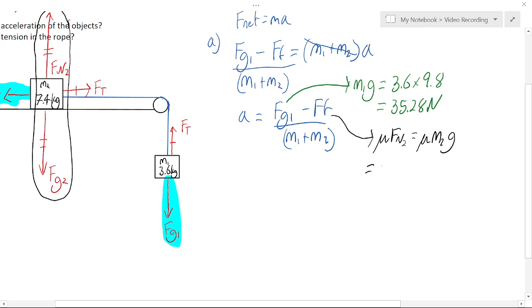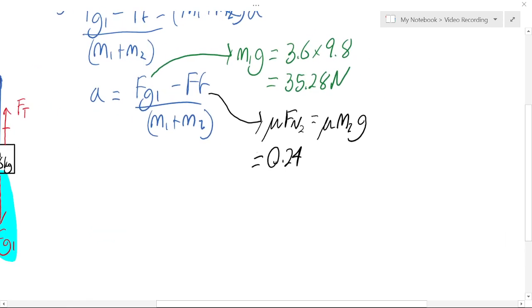so this is all equal to 0.24 is the mu value given in the question. M2 is 7.4. And lastly, g is 9.8. So the total friction force on the mass on the table is equal to 17.4 newtons.